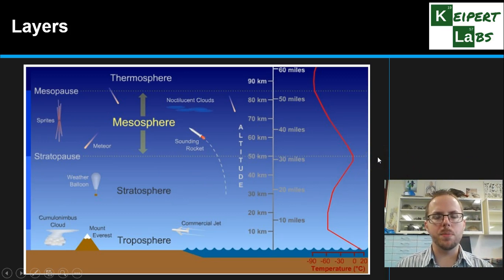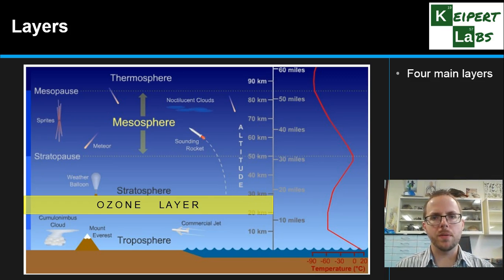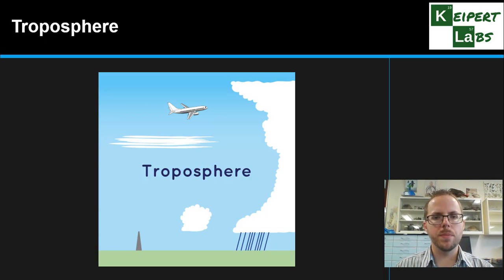The ozone layer is something we would find around the bottom of the stratosphere — that's one of the main reasons we talk about this in this topic. So let's start by thinking about the troposphere, which is the area of the atmosphere closest to ground level.